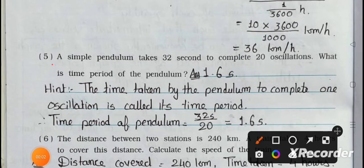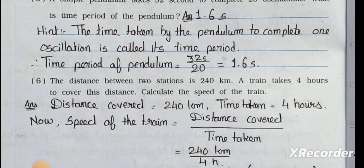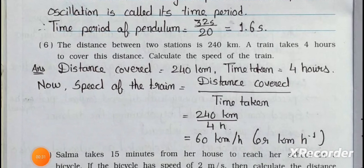Question number five: A simple pendulum takes 32 seconds to complete 20 oscillations. What is the time period of the pendulum? The time taken by the pendulum to complete one oscillation is called its time period. Time period = 32 seconds ÷ 20 oscillations = 1.6 seconds.